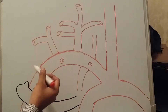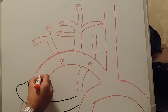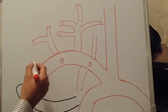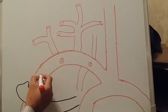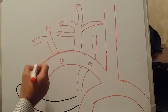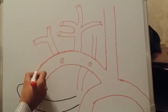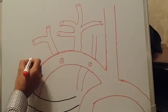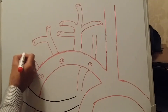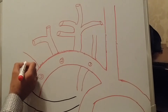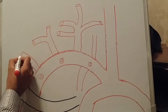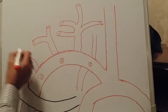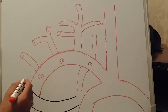The third portion of the subclavian artery provides only a single branch, which is called the dorsal scapular artery.